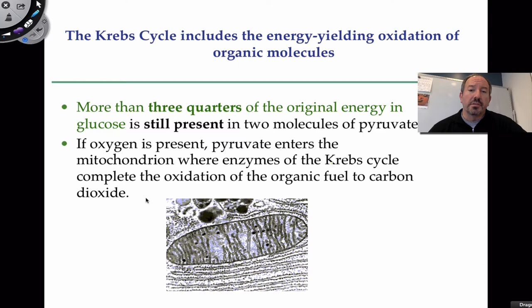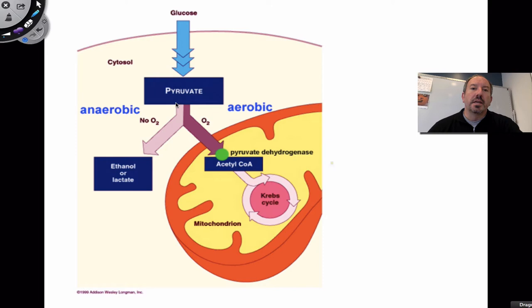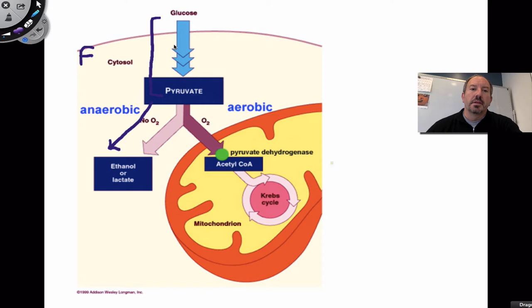If oxygen is present, pyruvic acid will be drawn into the mitochondria. If oxygen is not present, it'll stay in the cytosol and be turned into — through a redox reaction — ethanol, if you're bacteria or yeast, or lactic acid. Collectively, the 10 steps of glycolysis plus this conversion to ethanol is what we call fermentation. That is fermentation — without oxygen. If oxygen is present aerobically, pyruvate will be pulled into the matrix of the mitochondria.